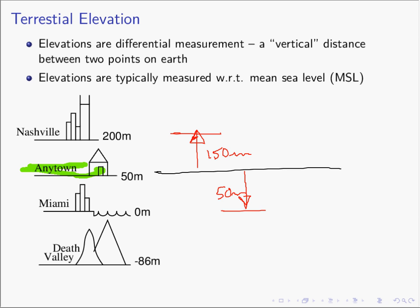So what we can do with these kinds of measurements is create a notation: the elevation of Death Valley measured with respect to Anytown is negative 136 — that is, Death Valley is negative 136 meters above Anytown, USA. If you understand that we measure terrestrial elevations with respect to mean sea level, and that we don't have to — we could measure with respect to other locations — then we're ready to begin our discussion of voltage.